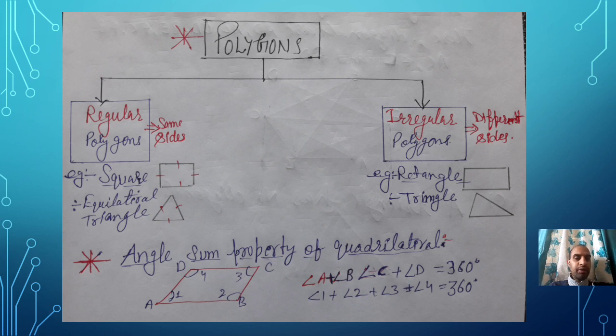Now, next category: what is the sum of the angles of a quadrilateral? If you are dividing by the help of a diagonal, it is made up of two triangles. For one triangle, you know the sum of angles is 180 degrees. So for two triangles it becomes 180 times 2, so the answer becomes 360.